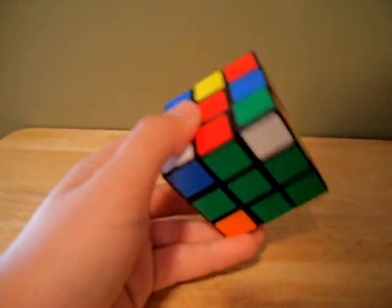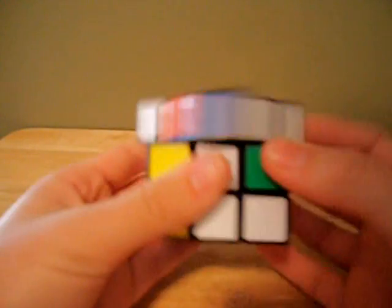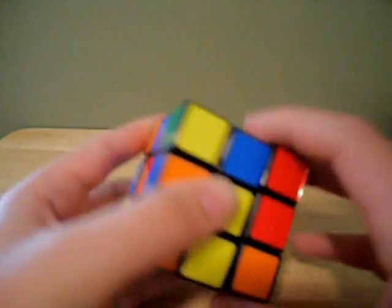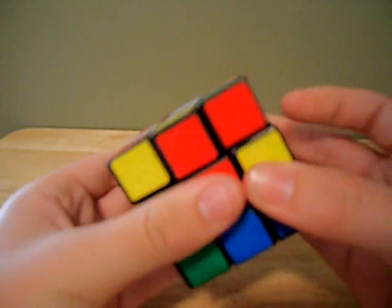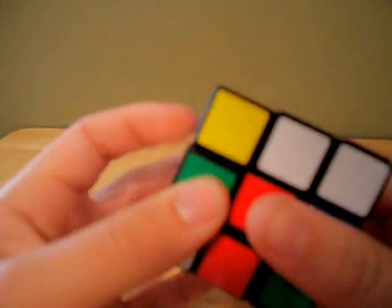Next is the first two layers. In the traditional method of layer by layer, you would just put in each corner piece like this. You would find the corner, you'd go like that, you'd slot it in. That's not the right spot, but that's not really the most efficient way.